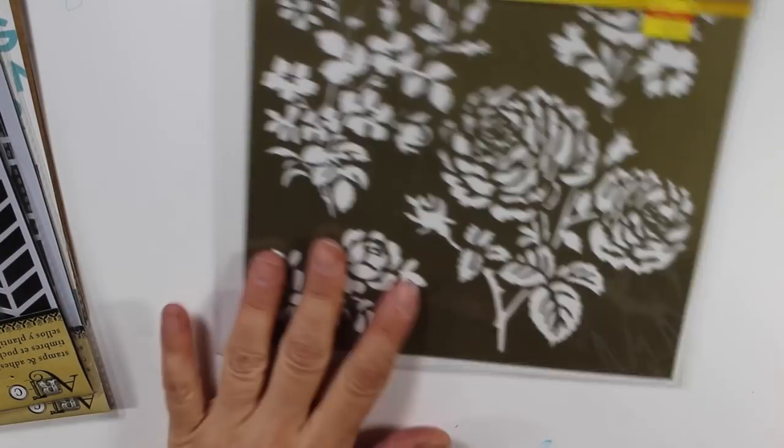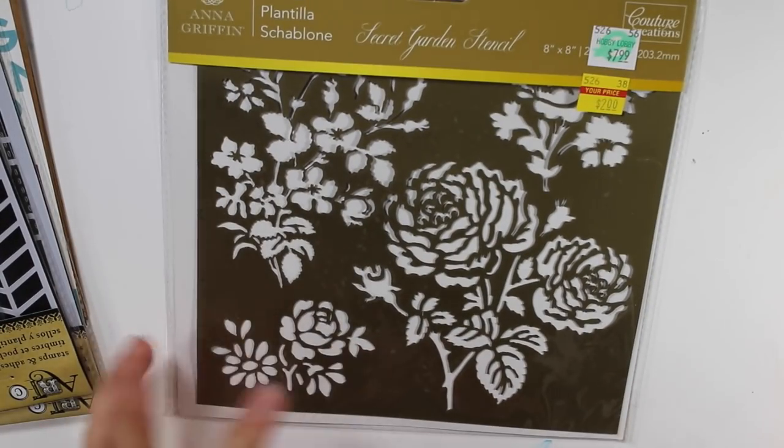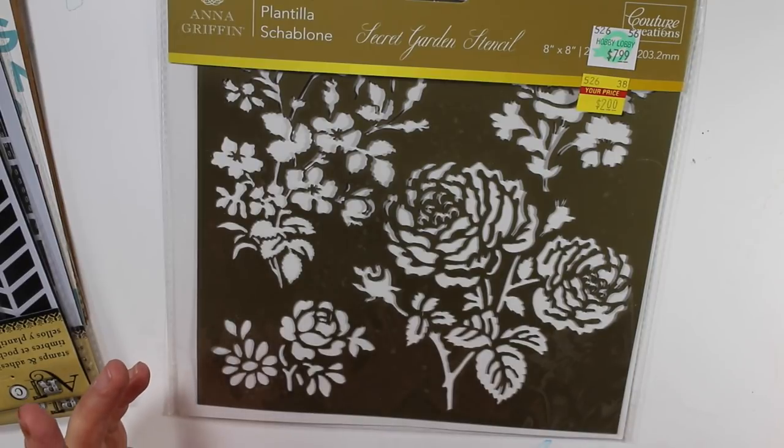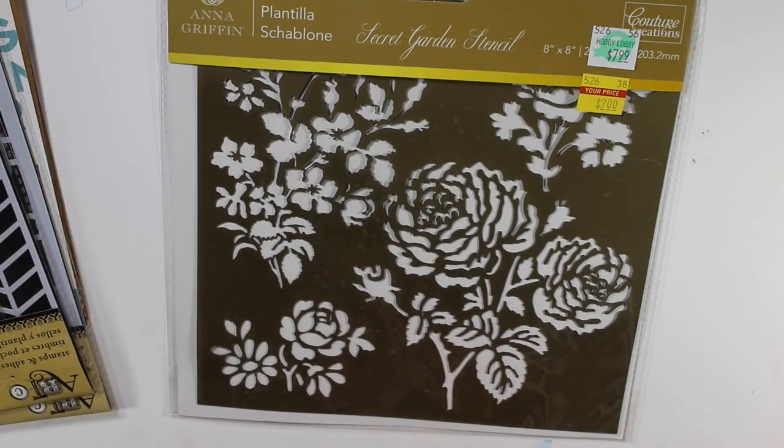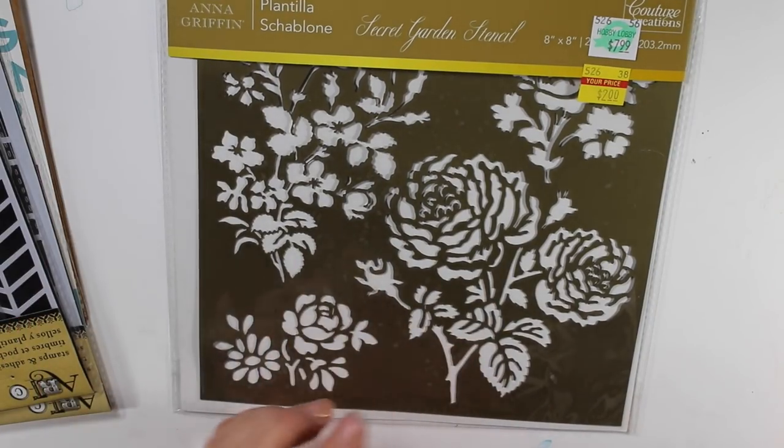This is another one. I'm not, I never really liked this one too much. I've seen this one. I've always passed this one up. It's the Anna Griffin one, but for $2, I picked it up because I do like flower backgrounds and I think it might make some nice cards and stuff. So.